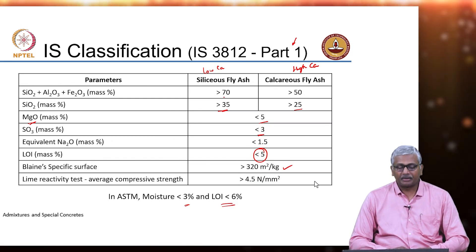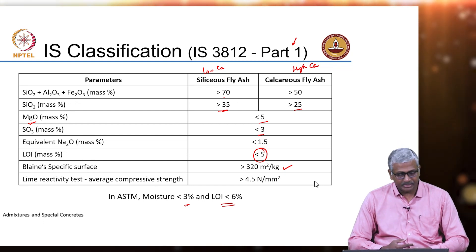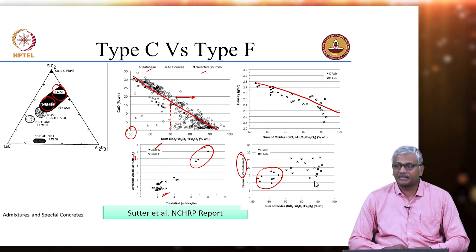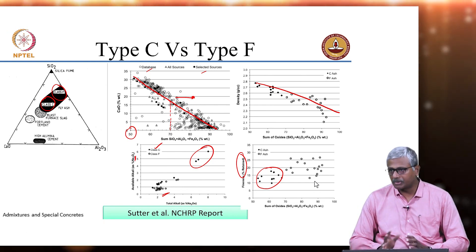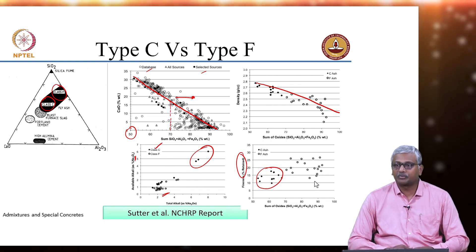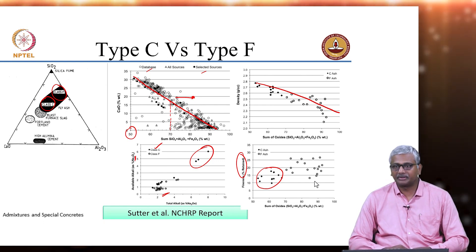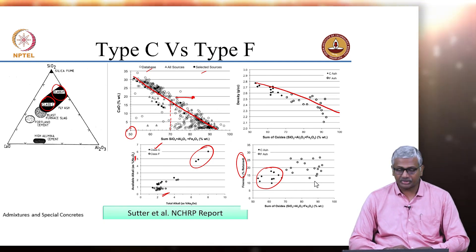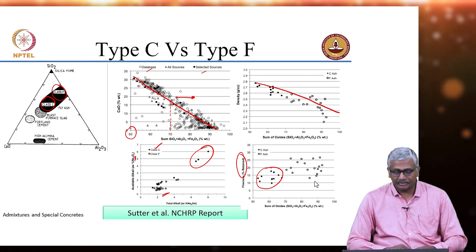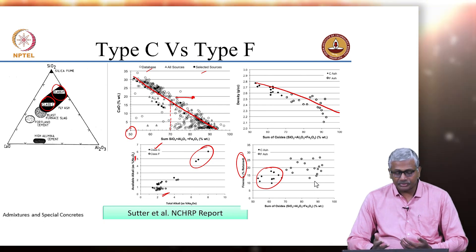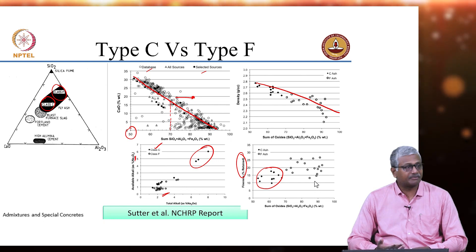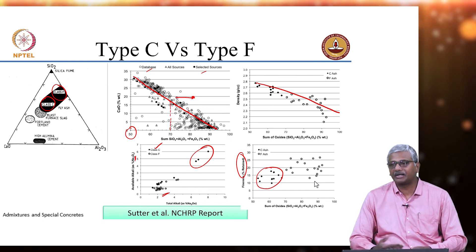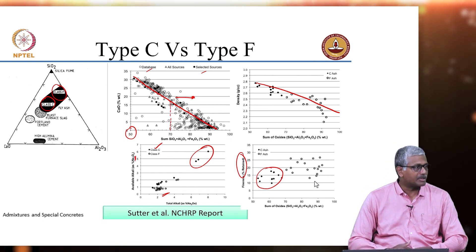We also looked at other aspects of the composition of fly ashes, what needs to be restricted primarily. We were discussing a larger study done in the US where they compared several different types of fly ashes and looked at composition characteristics. It is clearly seen that as the calcium oxide content increases, the sum total of the other three oxides goes down. The density also seems to decrease with lower calcium oxide or increasing silica, iron, and alumina. Alkali content also seems to depend significantly on impurity levels — class C fly ash, being from coal with greater impurities, ends up having a higher alkali load compared to type F.